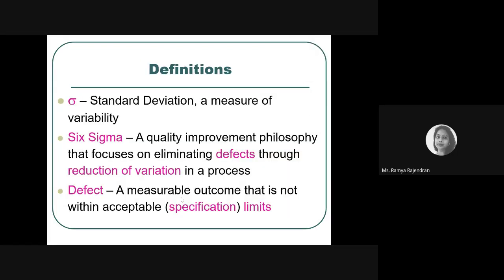Sigma is a variable that stands for standard deviation; when squared, we get variance. Six Sigma is defined as a quality improvement philosophy which focuses on eliminating defects by reducing variance in the process — whether manufacturing or any other business process. If you eliminate defects by reducing variance, you have a Six Sigma process.